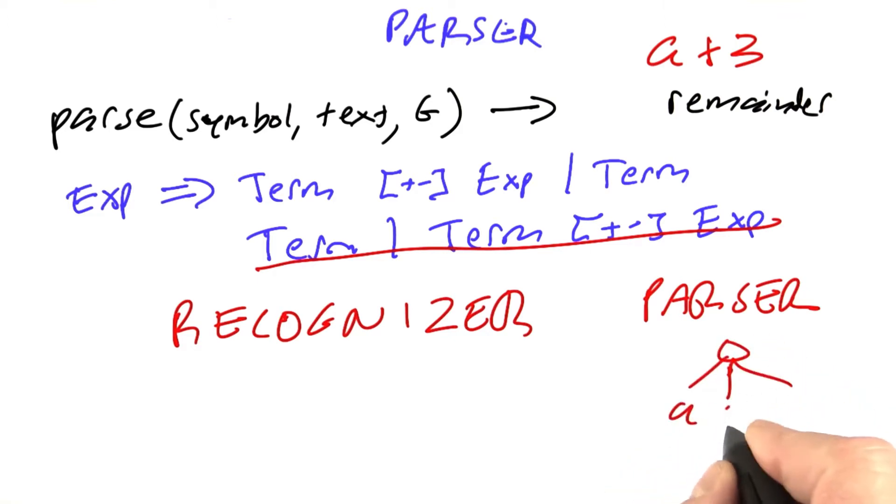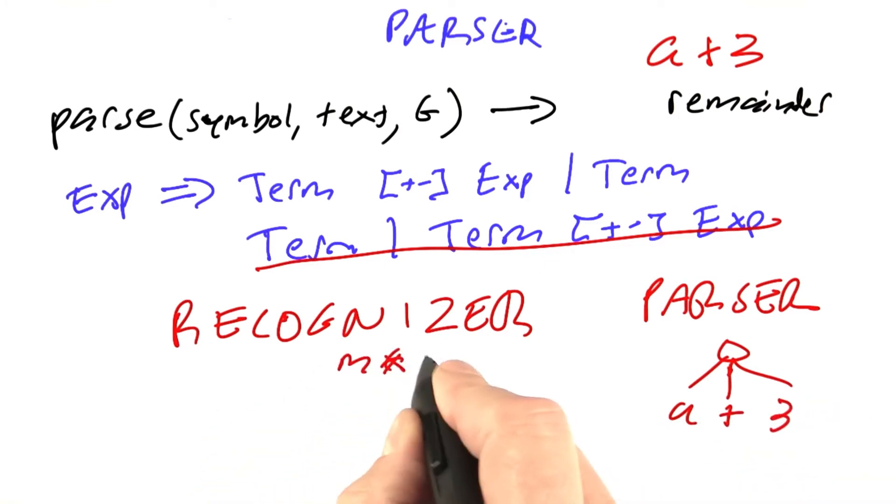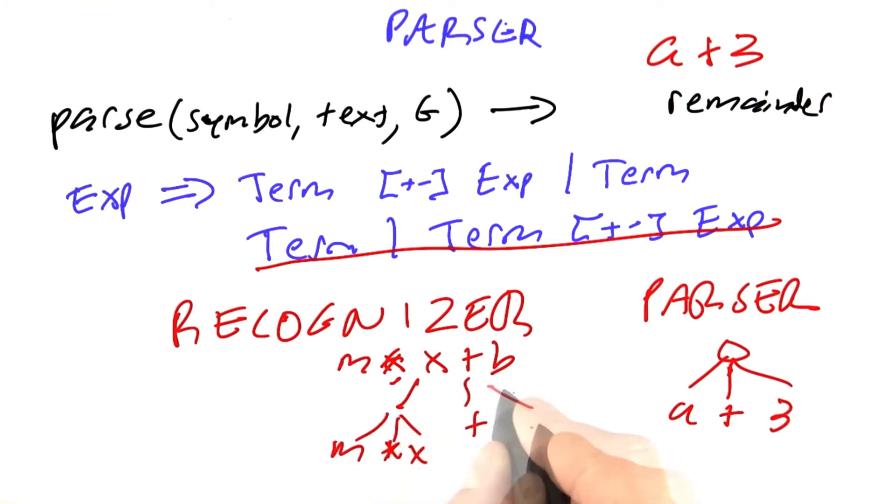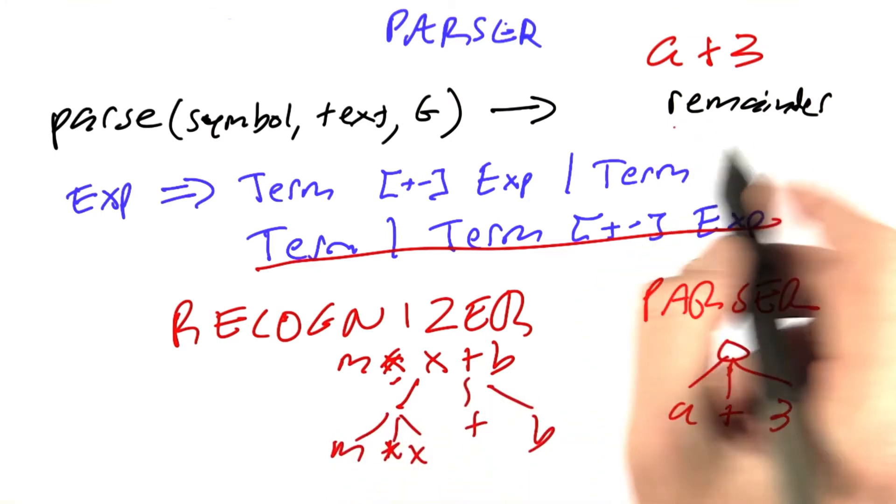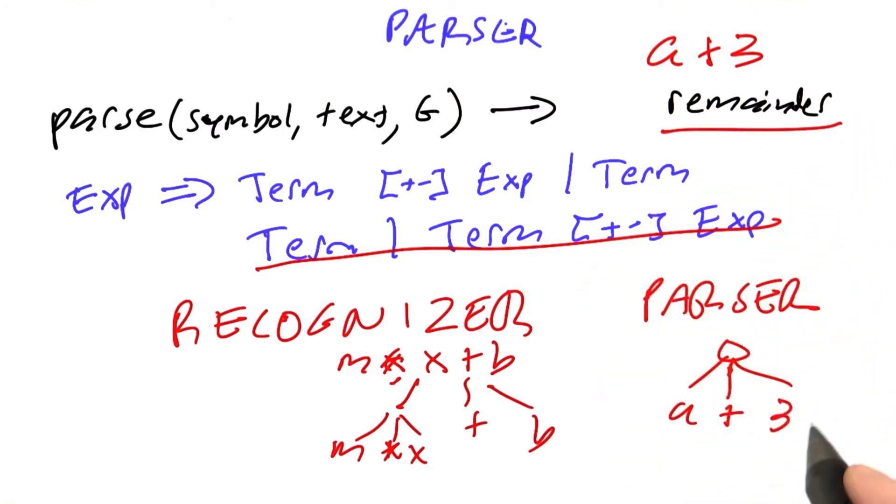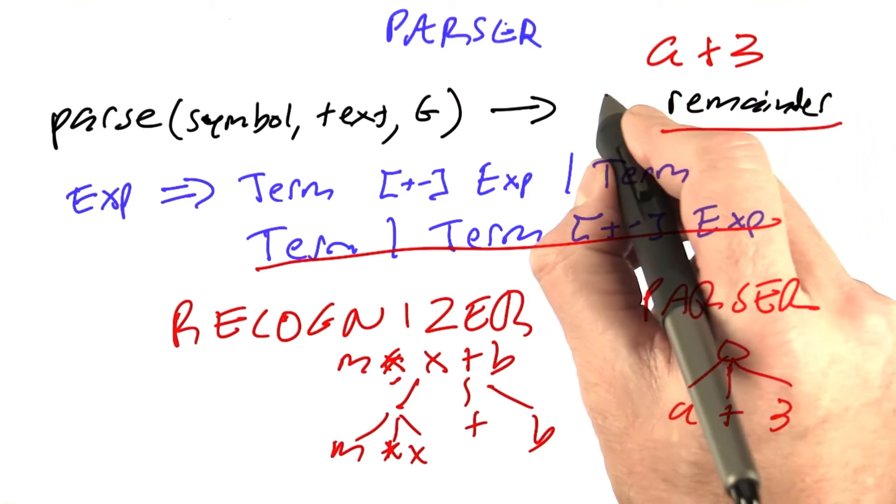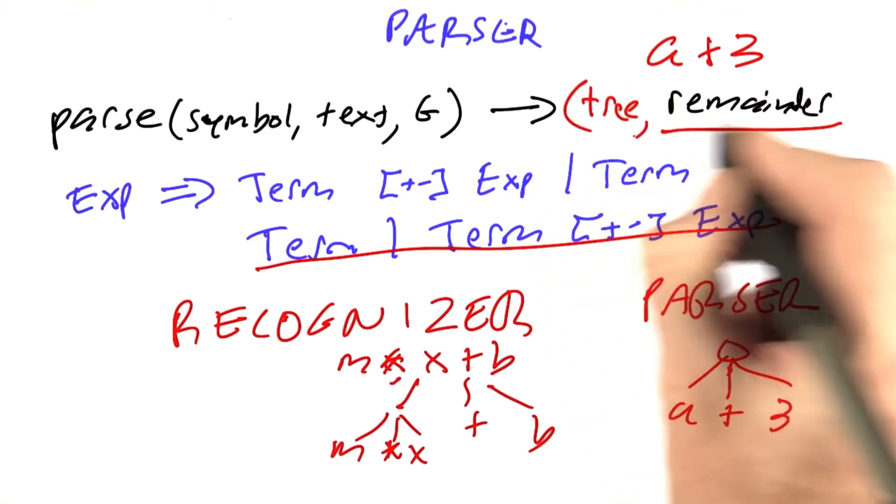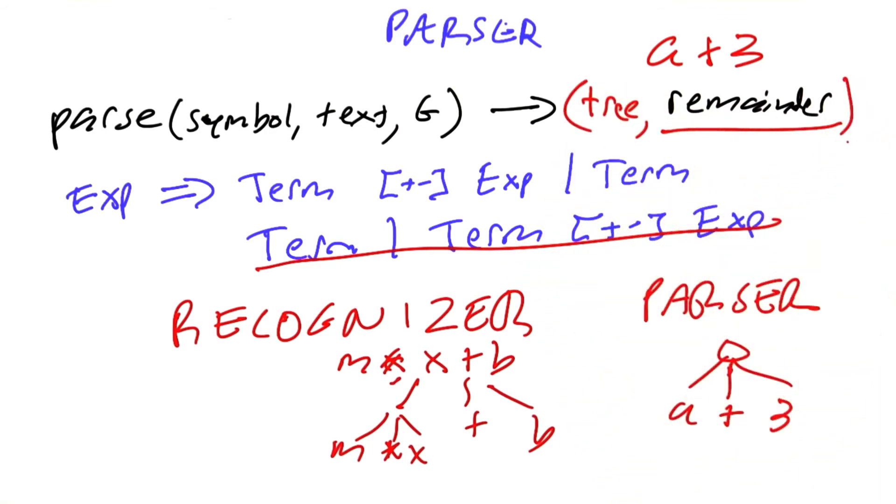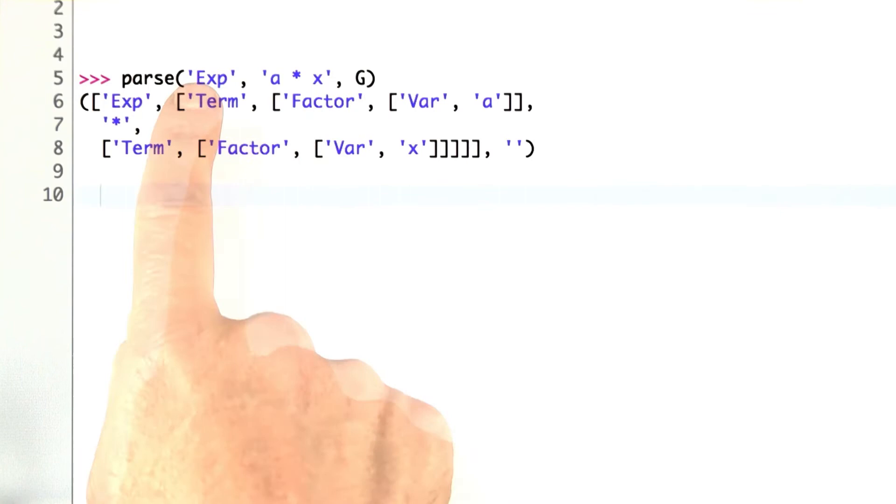Here it would be a plus 3. If we had m times x plus b, then that would parse into a structure that had m times x plus b. Here I said we were returning a remainder, but actually I want to return a two-element tuple of the tree followed by the remainder. Here's what we're going for. If I ask to parse the expression a times x with the grammar g, I want to get back this tree structure.